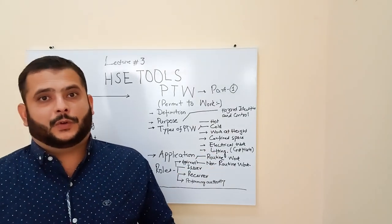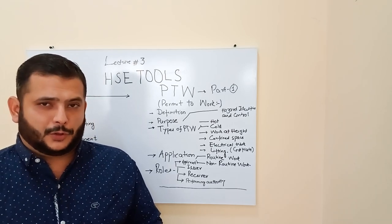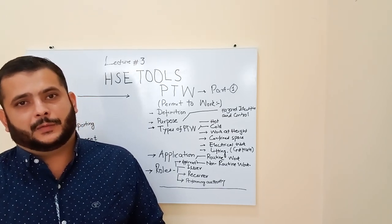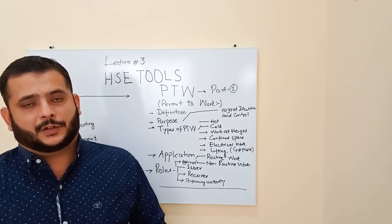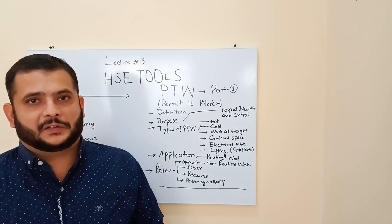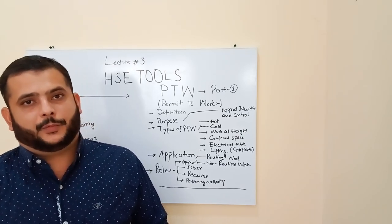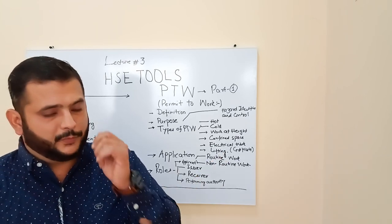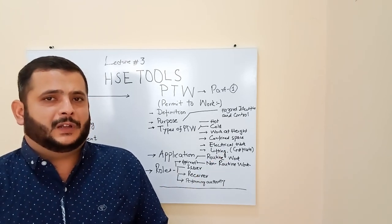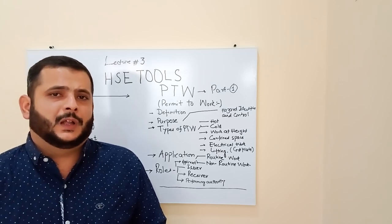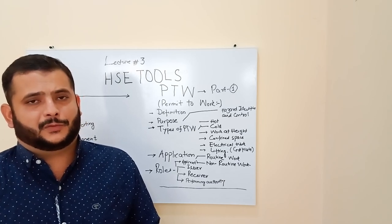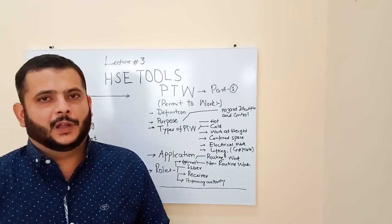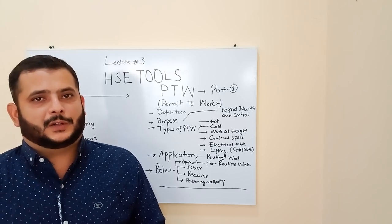Electrical work is another permit type — electricity is very dangerous. When doing a job with electricity, you must take permission regarding electrical work because it requires de-energization of the equipment. Any person working with live electricity may suffer an electrical shock, so this is very important. Lifting is not a standalone permit but comes under a certificate. When doing a job involving hot or cold works with equipment lifting, you need a crane, and crane operation requires a Lifting Certificate, as it involves critical lifting with many checklists to observe before startup.